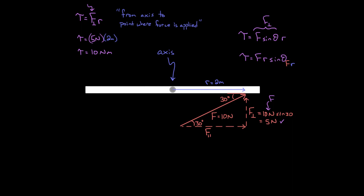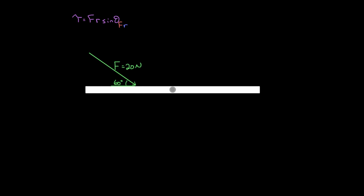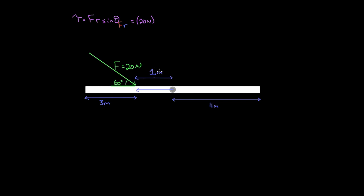Let's use torque equals F times R times sine theta to solve another example, because the only way to get good at this is to practice. Say there's a force of 20 Newtons applied at an angle of 60 degrees, and we're given multiple distances. We plug in the entire 20 Newtons for F. But we have three different distances — which R do we use? Remember, R is from the axis, which is in the middle, to the point where the force was applied. So the magnitude of R is one meter, not three or four.